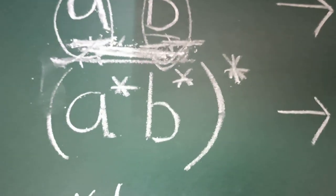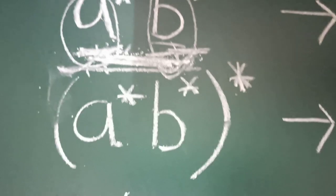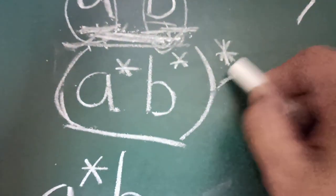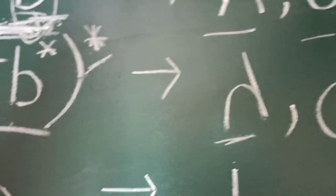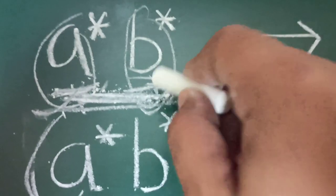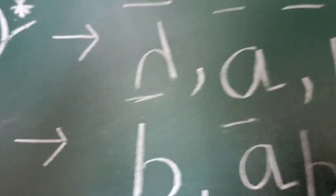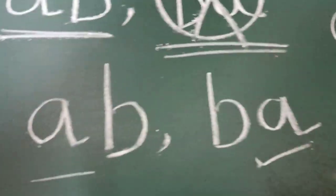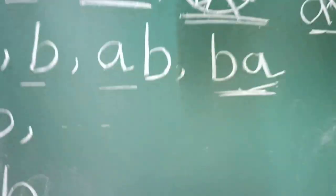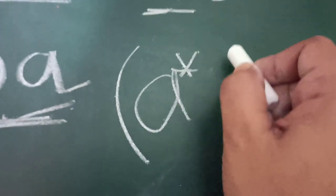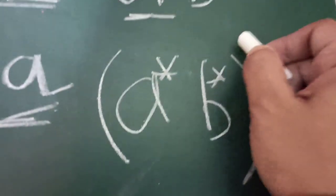Now come to A* B* whole star. What is this? Lambda is definitely accepted because the outer star allows lambda. After that, one A can be taken, just as we did in A* B* — that can repeat. So one A, one B, and AB can all be there. But here BA is also accepted. Why? How is BA accepted in A* B* whole star?